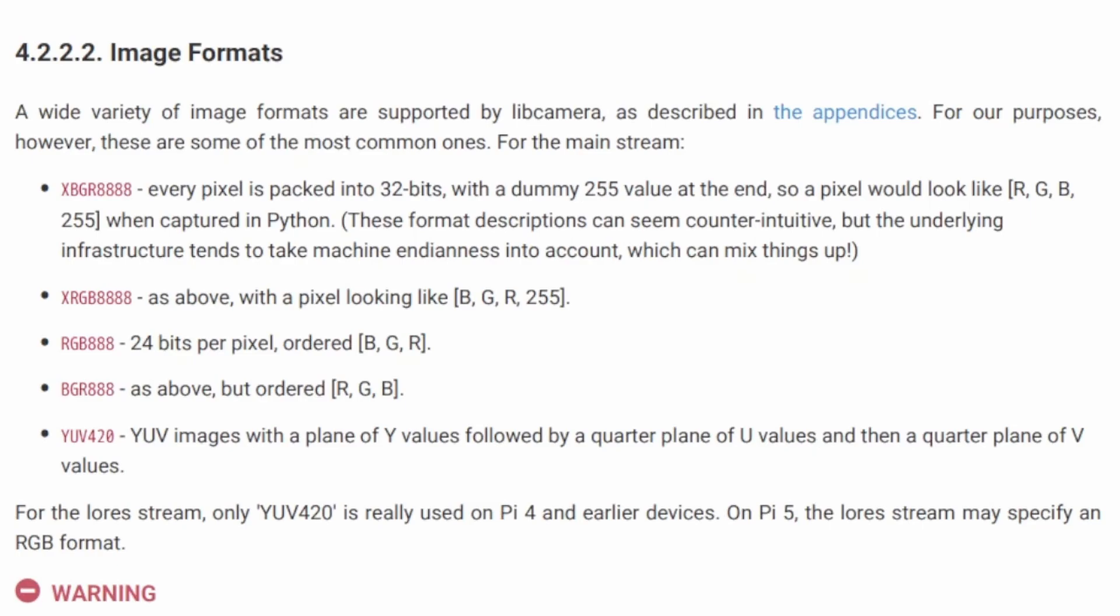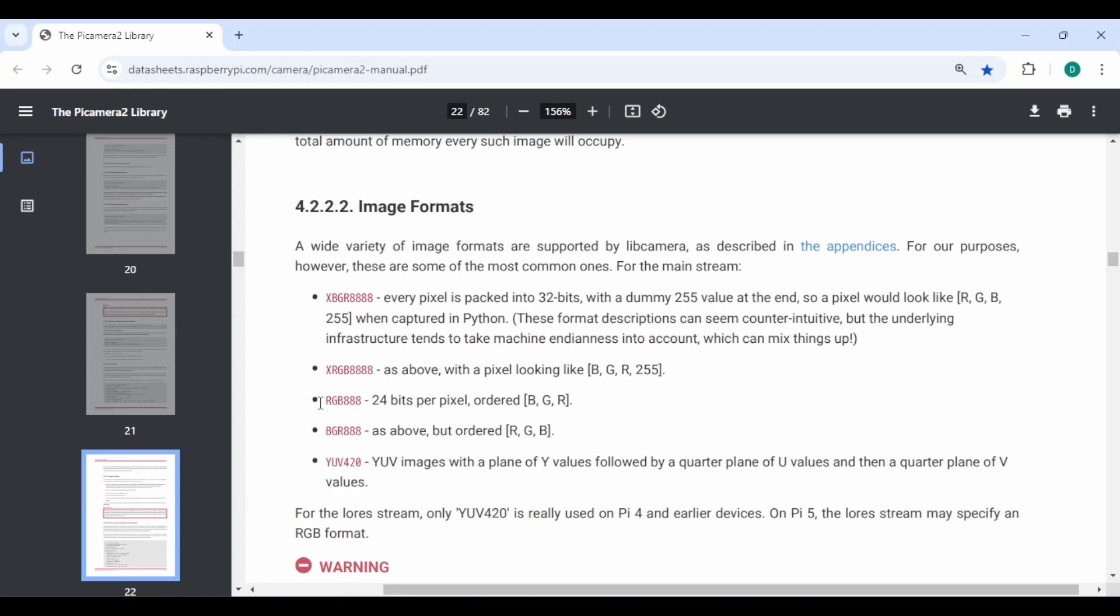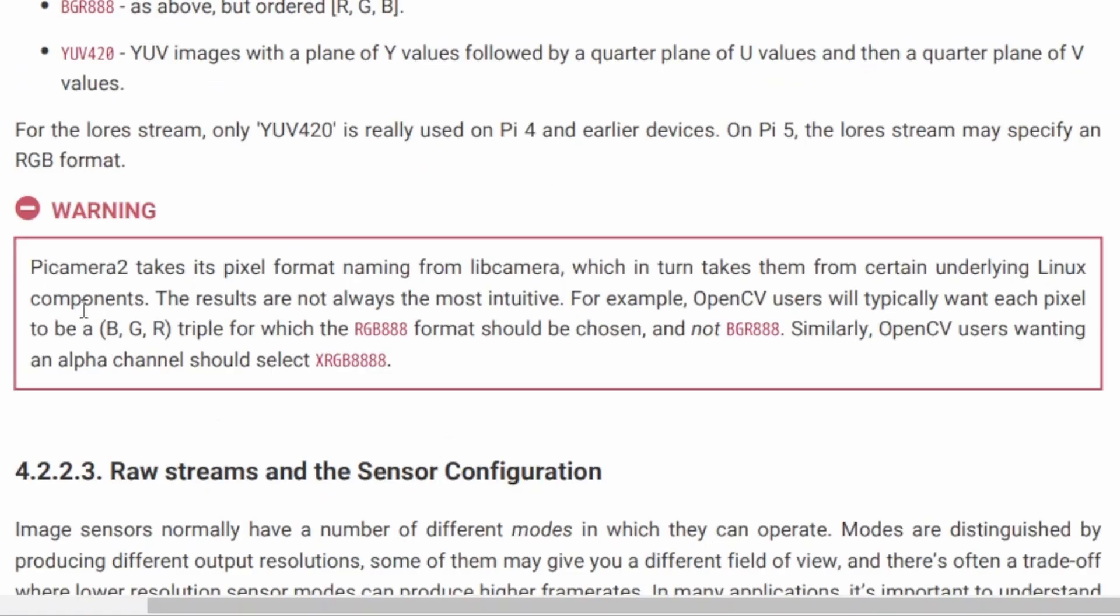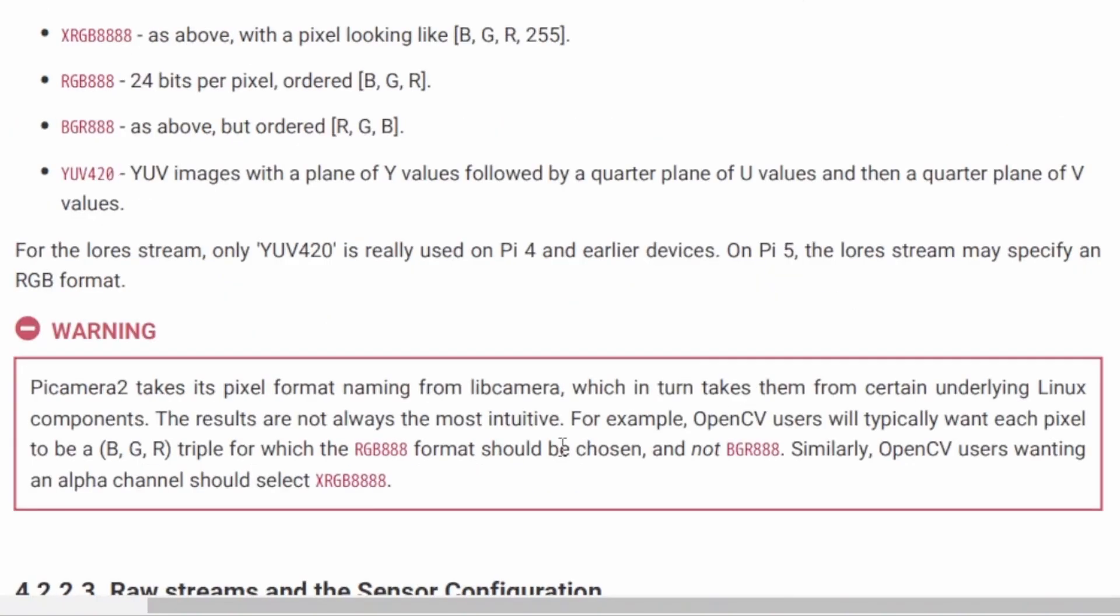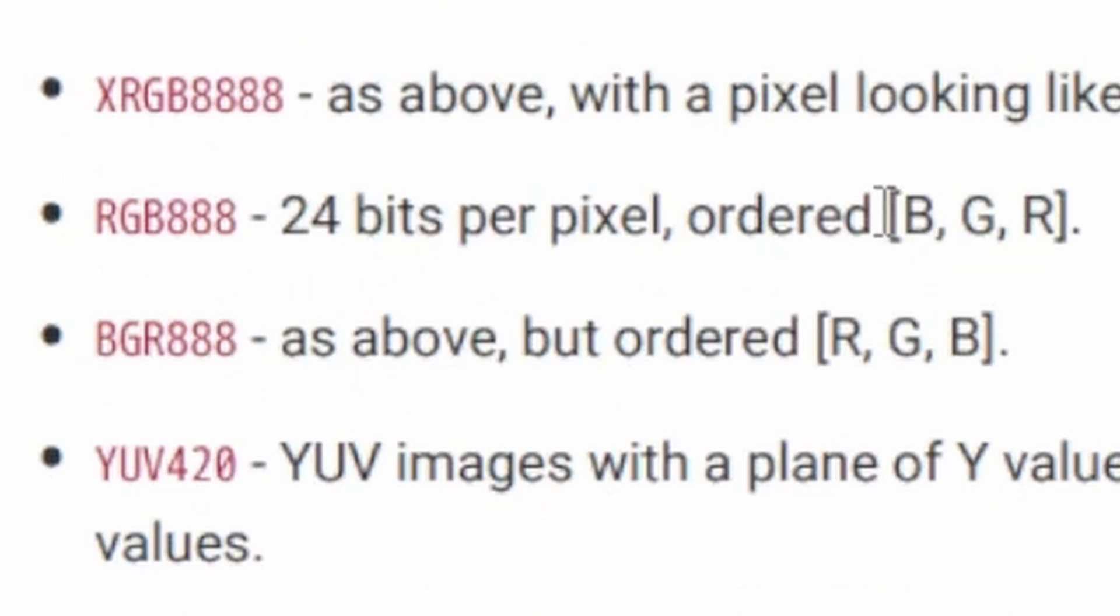We will focus on the standard 24 bits per pixel meaning no alpha channel. One thing to take into account is that OpenCV by default uses BGR. So we should pick the option that gives you BGR. Now pay close attention. That's the one called RGB888. PiCamera2 takes its pixel format naming from libcamera which takes from certain underlying Linux components. The results are not always most intuitive. For example, OpenCV wants the pixels to be in BGR, for which you should use the RGB888 format and not the BGR. So the one that gives you BGR is called RGB which is not intuitive at all.